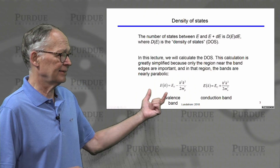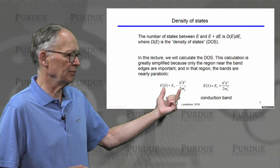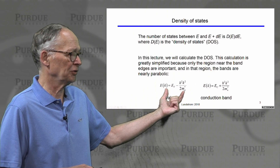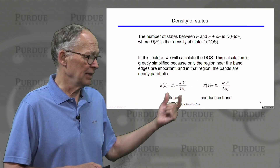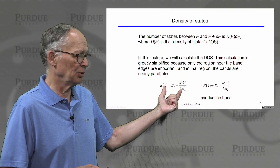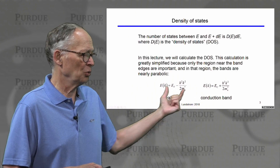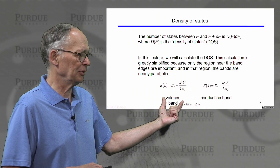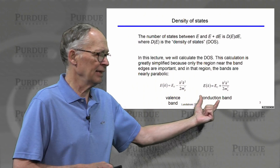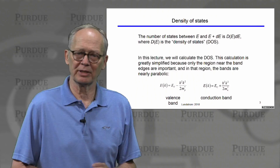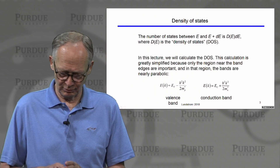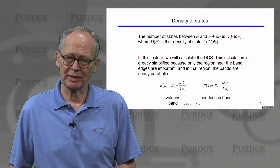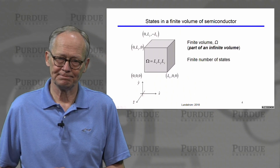We're going to take a simple description of energy versus crystal momentum. These simple descriptions work near the top of the valence band and near the bottom of the conduction band, and that's going to be adequate for most semiconductor work.